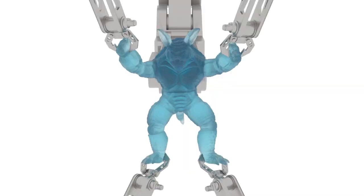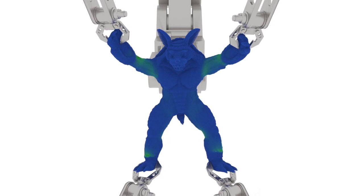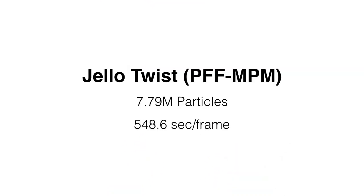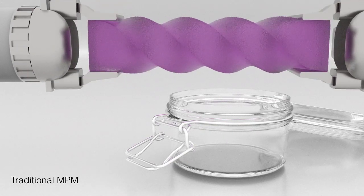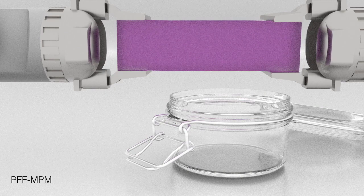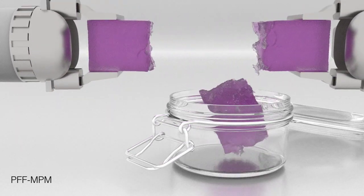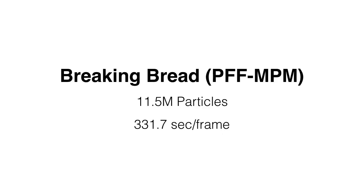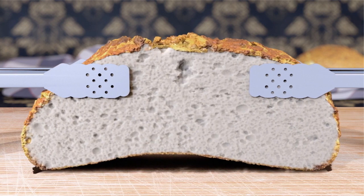Here, we tear apart a soft armadillo, and this time we visualize the phase field. When twisting a jello bar with robotic arms, traditional MPM does not produce any fracture. PFF-MPM, on the other hand, produces highly detailed fracture. Finally, to celebrate the introduction of our CD-MPM methods, we'd like to break some bread with you.